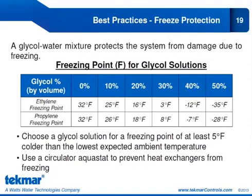Another best practice is freeze protection. Snow melt systems typically operate at very low temperatures, so a glycol-water mixture is essential to prevent damage from freezing. There are two types: ethylene and propylene. Propylene is the standard recommendation because it is non-toxic, unlike ethylene. Choose a solution that gives a freezing point at least 5 degrees colder than the lowest expected ambient temperature — typically around 40% propylene. Using a circulator aquastat is also recommended to prevent heat exchangers from freezing, which will be covered in the 654 control applications.